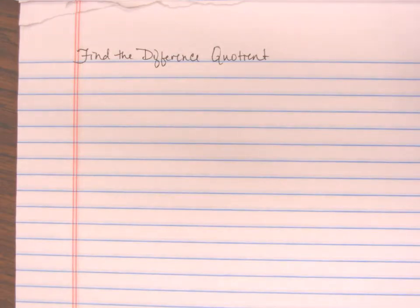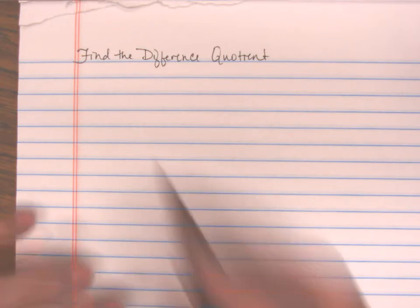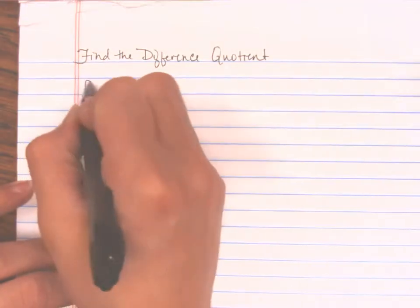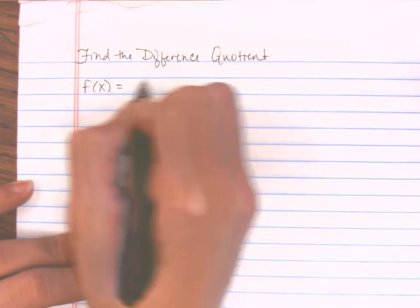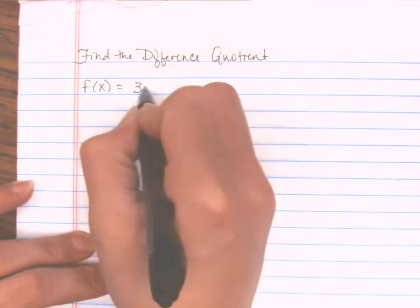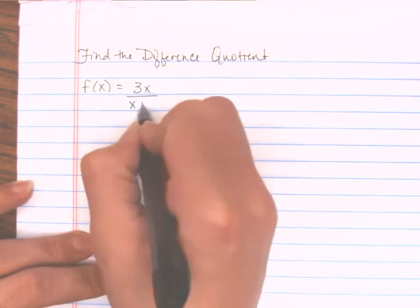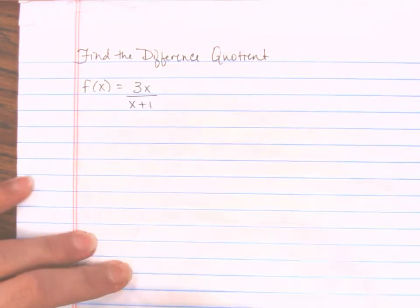In this video, we're going to look at another example of finding the difference quotient of a function. We're asked to find the difference quotient of f(x) = 3x divided by x plus 1.